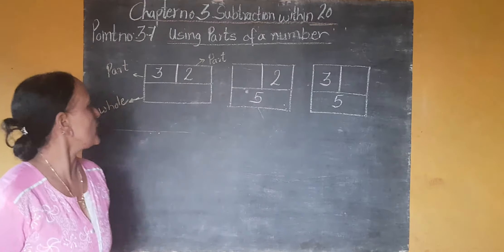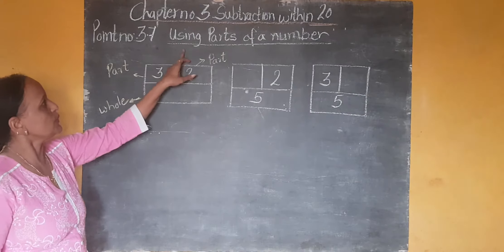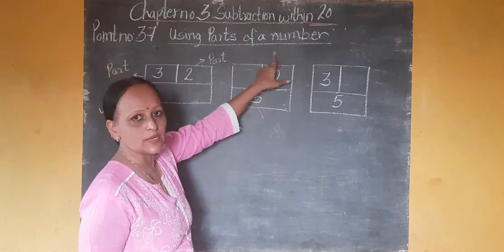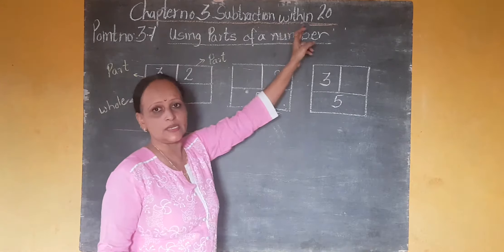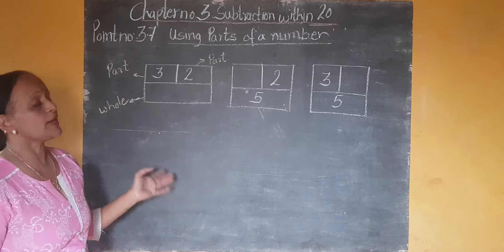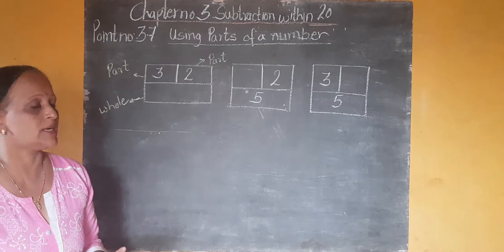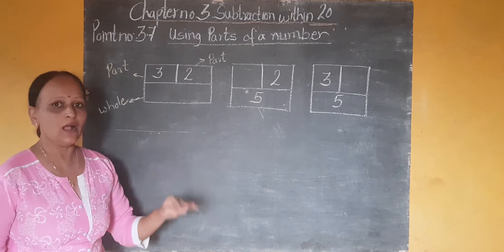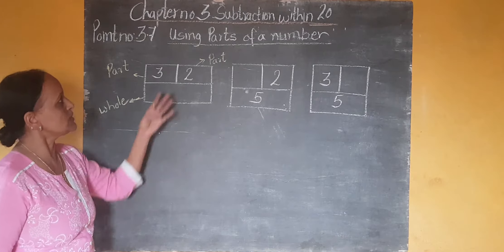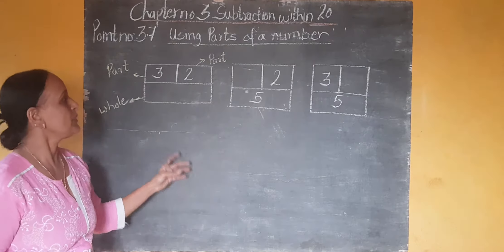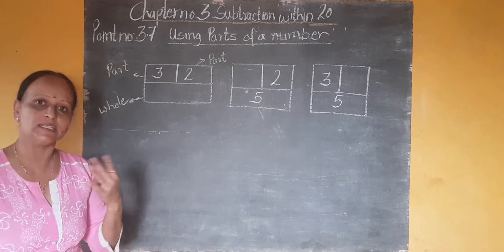Hello students, today we are going to start point 3.7, Using Parts of a Number, from chapter number 3, Subtraction Within 20. In the last topic — Addition Within 20 — we studied parts that make a number. The same way in subtraction, we have to use the parts of a number. You can find the answer by using addition and subtraction.